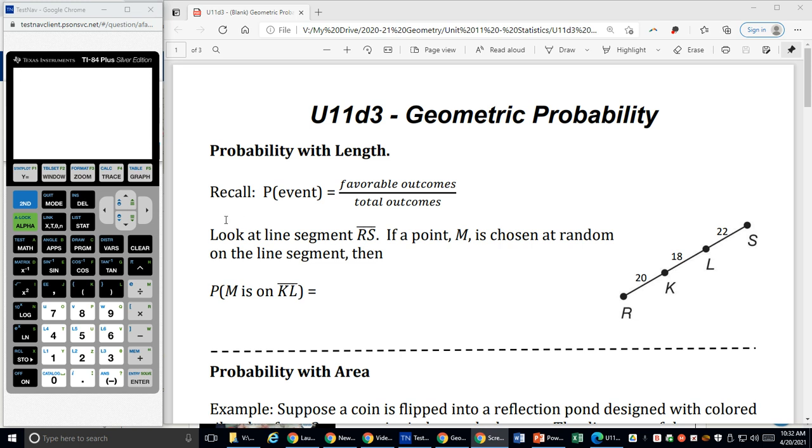We need to remember that when we're looking for the probability of some event happening, we look at the number of favorable outcomes over the number of total outcomes. So when I look at this line segment here, line segment RS, from R all the way to S, it says if point M is chosen at random on the line segment, then what is the probability that point M is on segment KL?